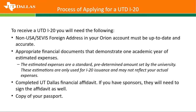We also need to see what's called the financial affidavit. This is something created by UT Dallas — it's not a government form, but it's a way for us to know who is helping you with your funding. If that's you, you indicate that and sign it. If you have sponsors, they also sign the affidavit to show that they know they're sponsoring you. You can't just write in your aunt's name and hope she'll give you money — she needs to agree as well. And we need a copy of your passport to have your legal name and documentation on file.